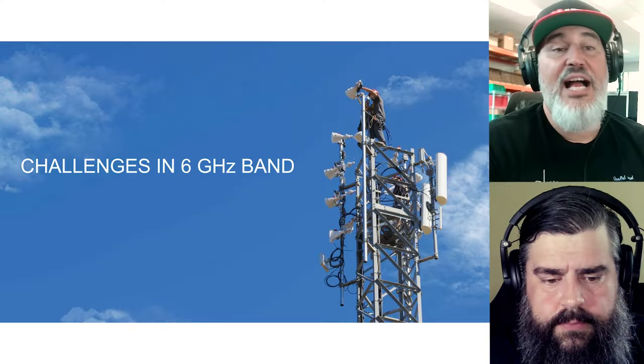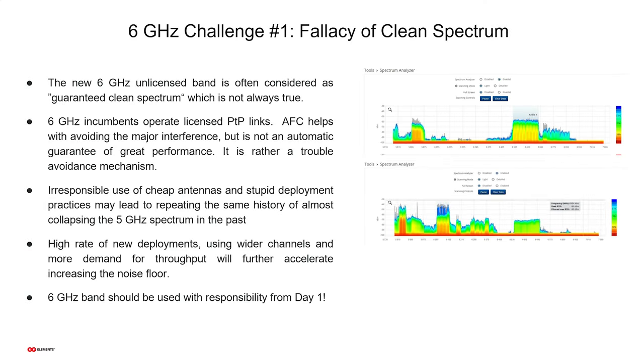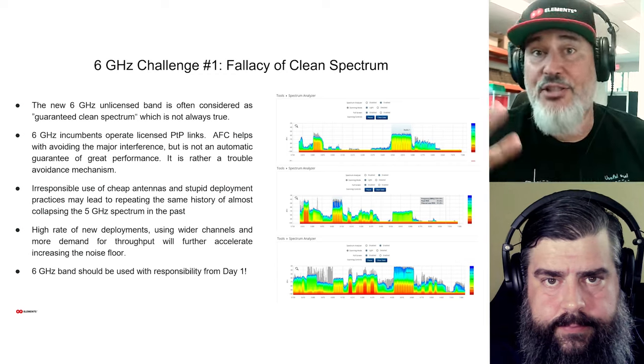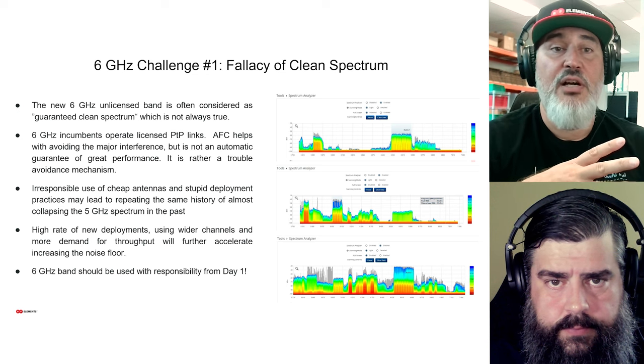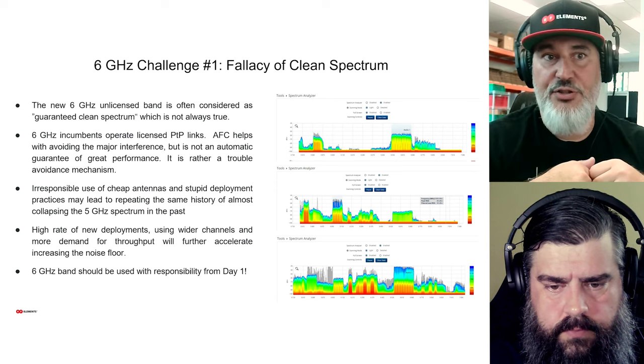There are some challenges in using the 6 gigahertz band that are important to take into consideration. The first challenge is the misconception that the spectrum is actually clean. Yes, there's 850 megahertz of new spectrum, but the 6 gigahertz band has been used for years by licensed incumbents running point-to-point links. The AFC system will help guide you so you don't deploy at azimuths or power levels that interfere with those licensed incumbents.